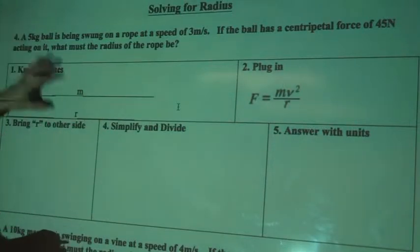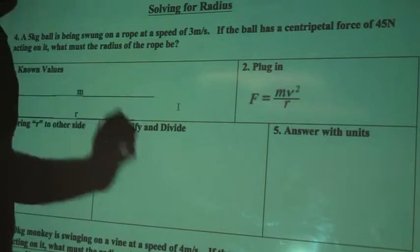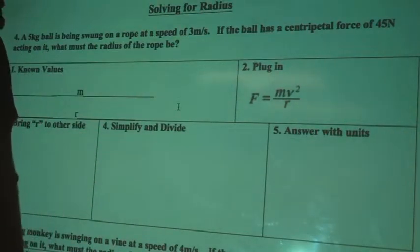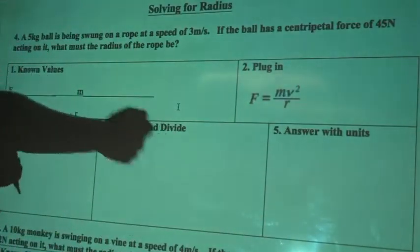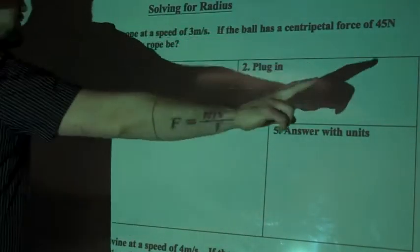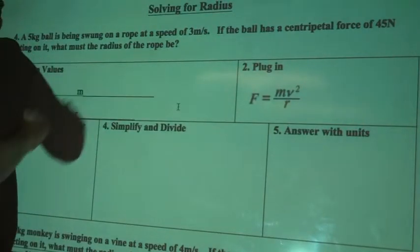Let's read the question and then plug in our known values. A 5 kilogram ball is being swung on a rope at a speed of 3 meters per second. If the ball has a centripetal force, the rope is pulling on the ball with 45 newtons acting on it, what must the radius of the rope be? So we're looking for the length of that rope that's spinning around.